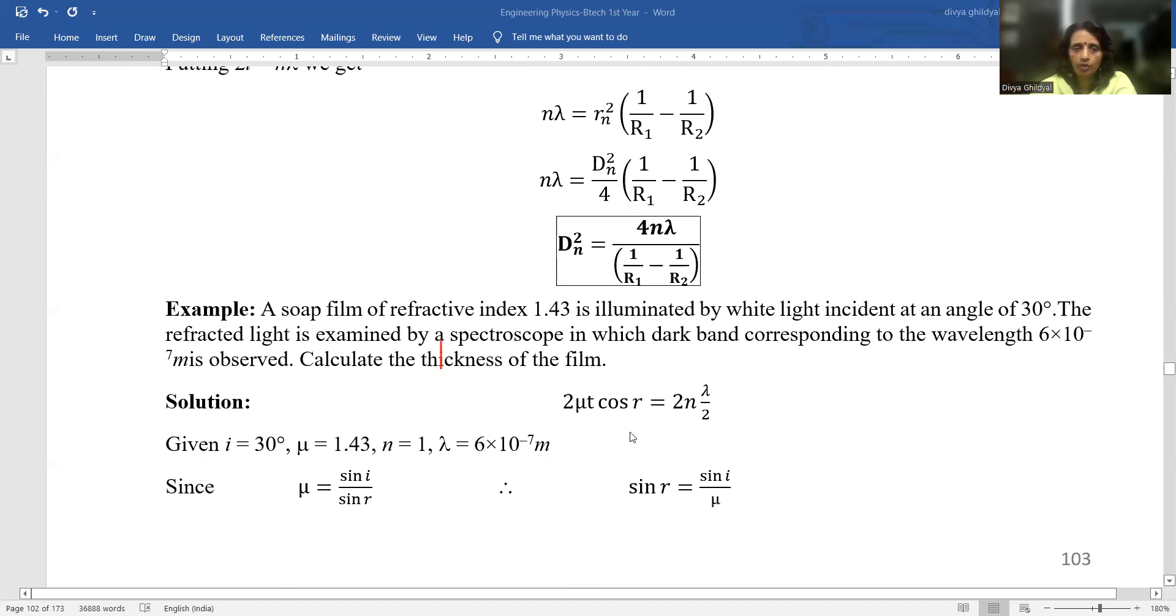Quickly, we will do a few important numericals that have been asked off and on. A soap film of refractive index 1.3 is illuminated by white light at an angle of 30 degrees.